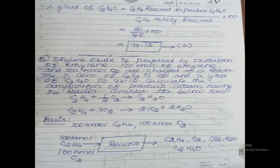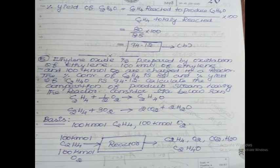Fifth problem: ethylene oxide is prepared by oxidation of ethylene. 100 kilomoles of ethylene and 100 kilomoles of oxygen are fed to a reactor. Percentage conversion of ethylene is 85. Percentage yield of ethylene oxide is 94.12. The objective of this problem is to determine the composition of products leaving the reactor, considering the two given reactions.